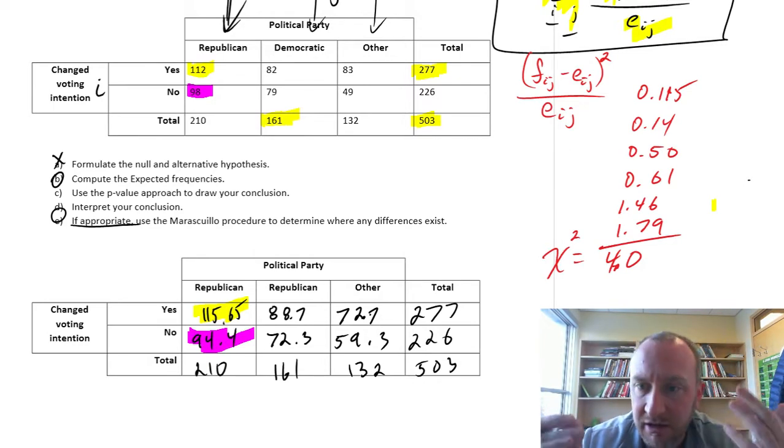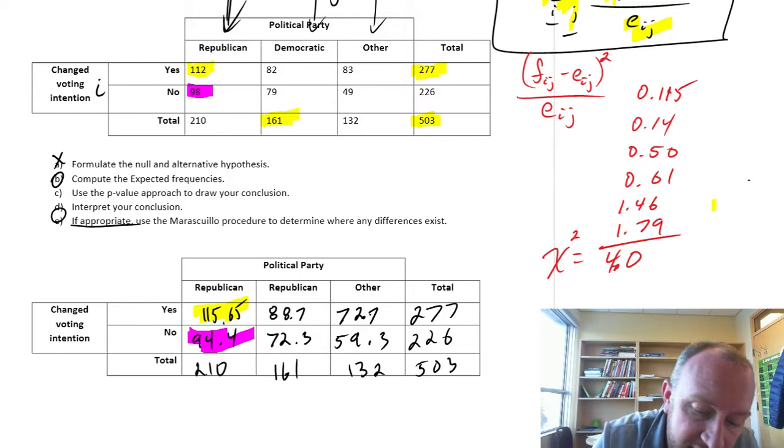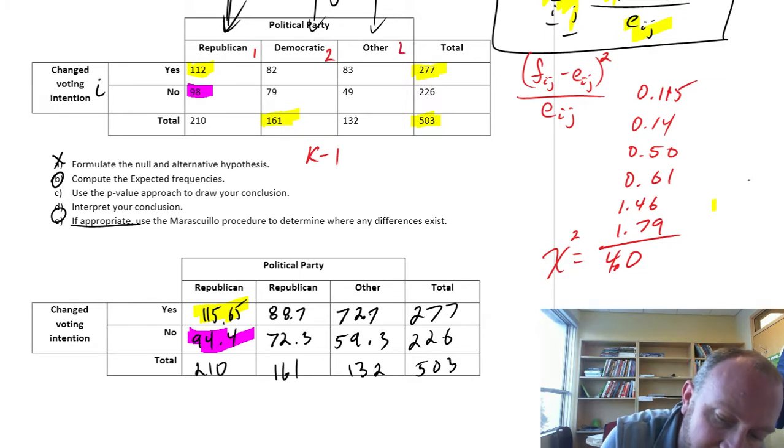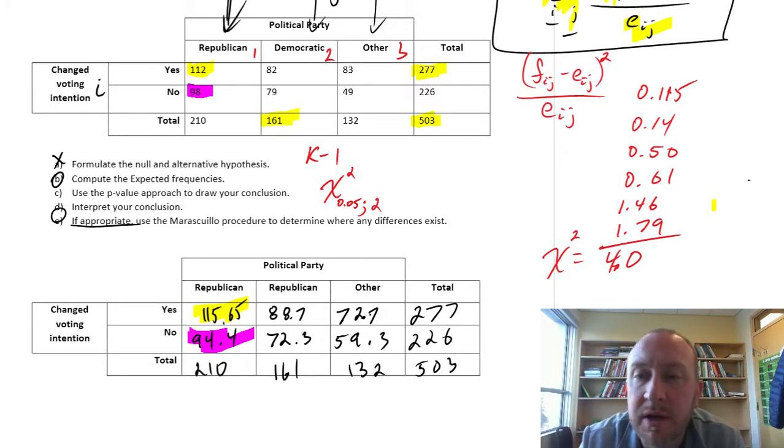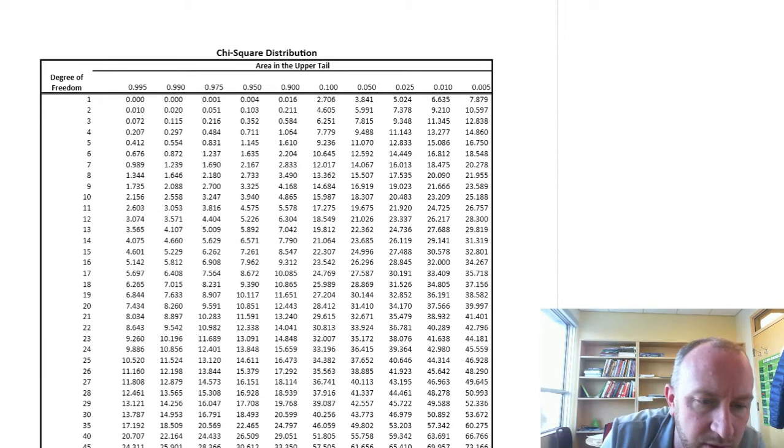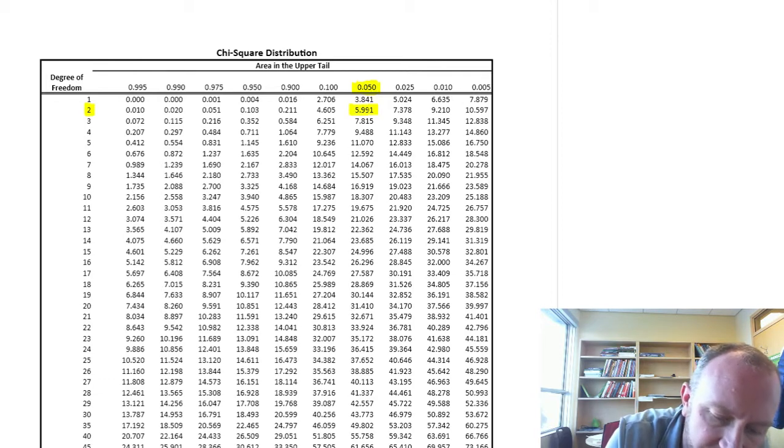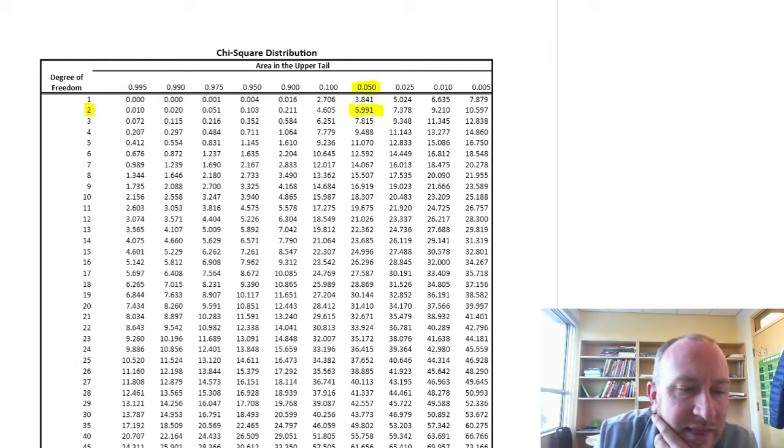Now the rest is just like any other hypothesis test that we've done. We go to our tables, we get a critical value, p-value, all that fun stuff. So what would our critical value be? Well, we need degrees of freedom. Degrees of freedom here is k minus 1, and in this case, k is equal to 1, 2, and 3. So our critical value, chi-squared, 0.05 is our alpha, and we have 3 minus 1, so we have 2 degrees of freedom. If we go to our chi-squared tables, so now I'm looking for 2 degrees of freedom, and alpha is 0.05, so there's our critical value there, 5.991.